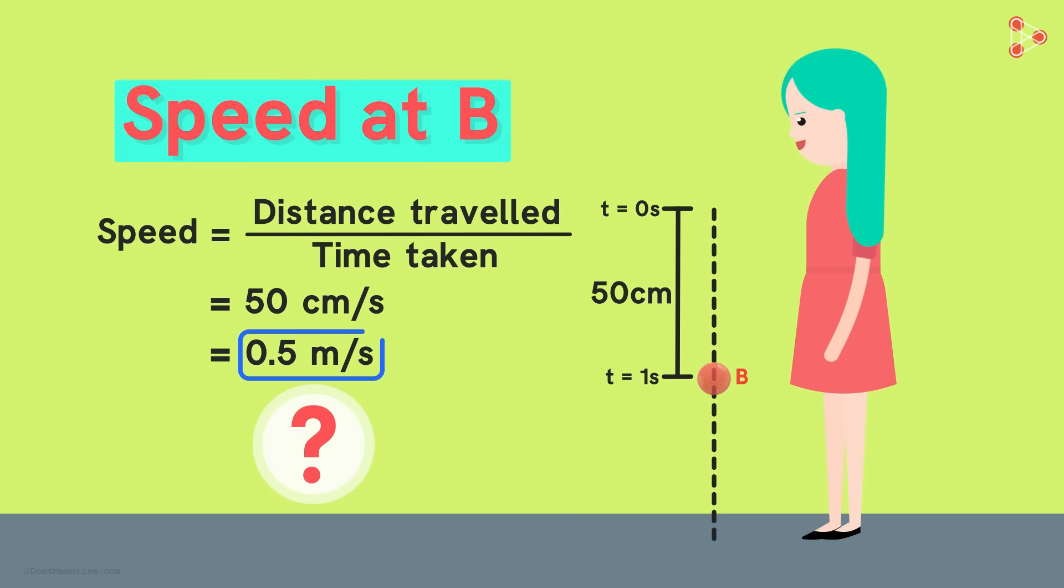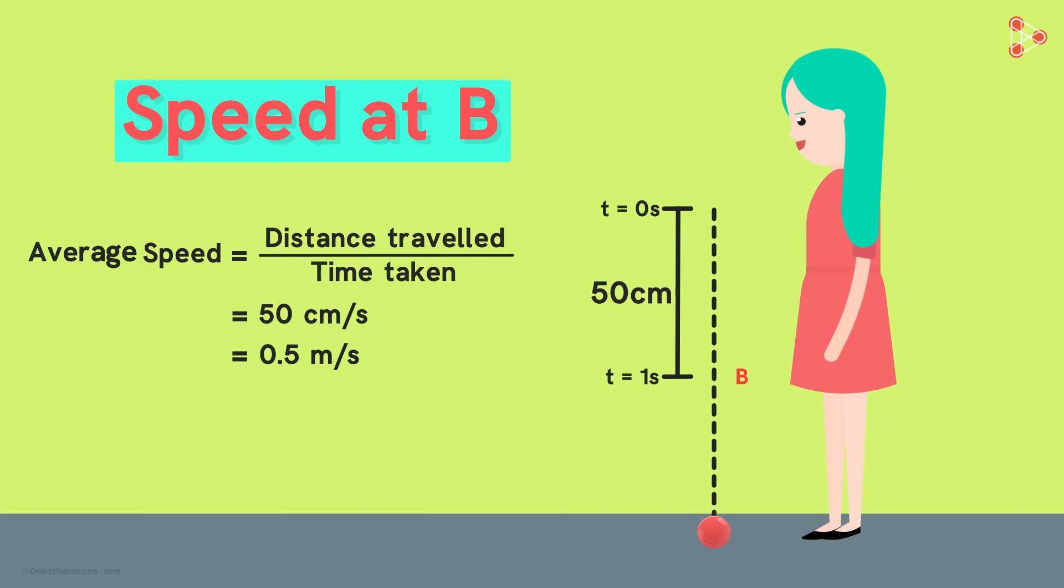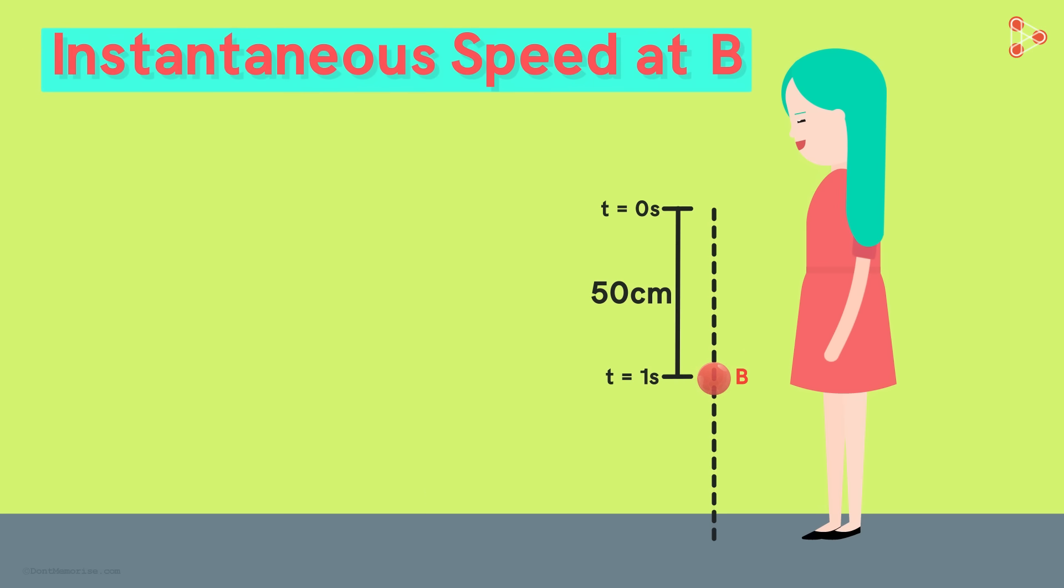But is this the speed of the ball when it is at point B? No it is not. This answer would have been correct if the speed of the ball was constant throughout its motion. But we know that the speed of the ball increases as it falls. So the answer Nora got is actually the average speed of the ball as it reaches the position B. But what we are interested in is the speed exactly at the instant when the ball is at position B. That is called the instantaneous speed of the ball.